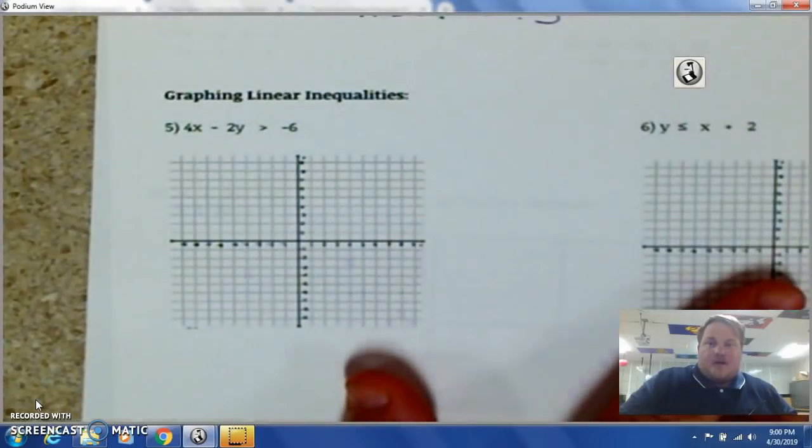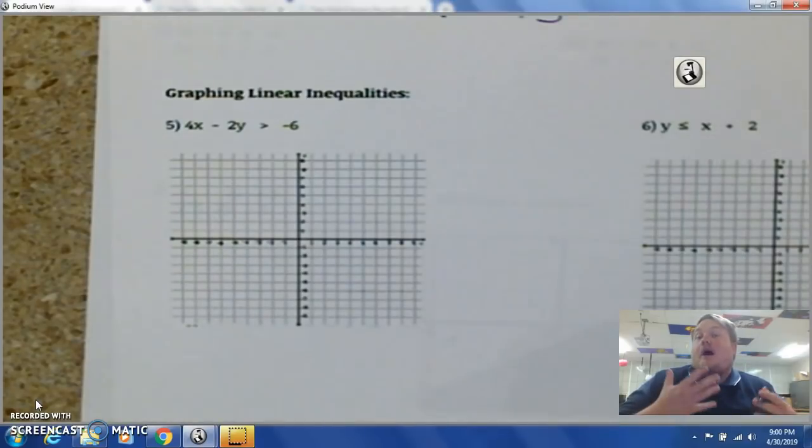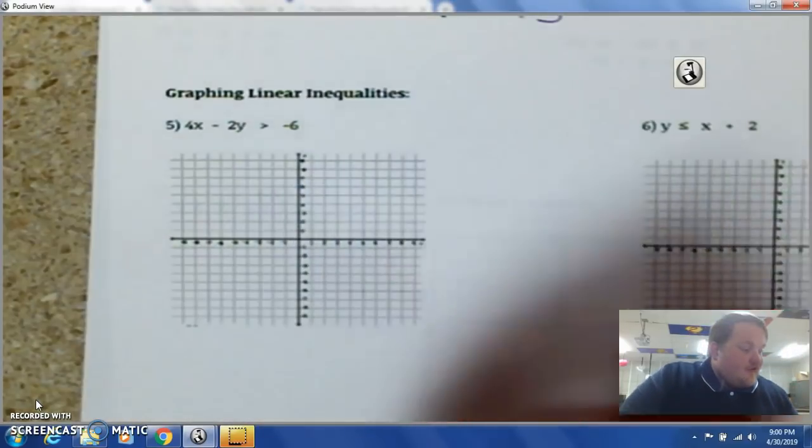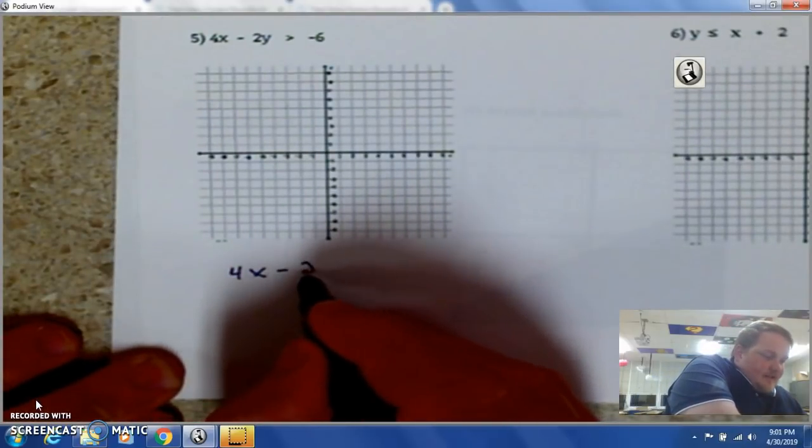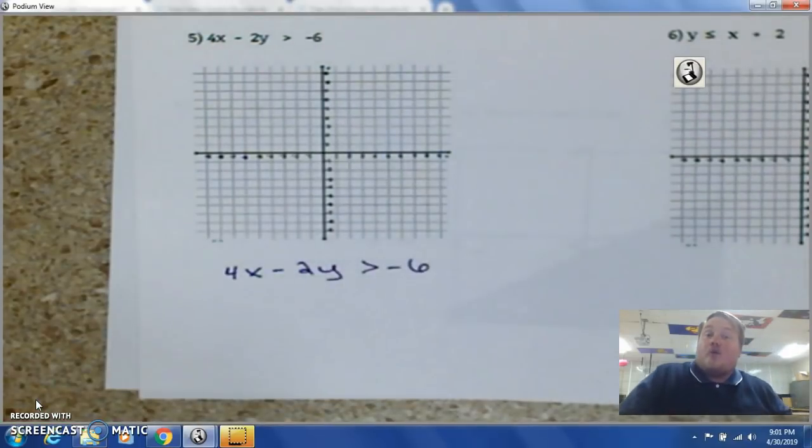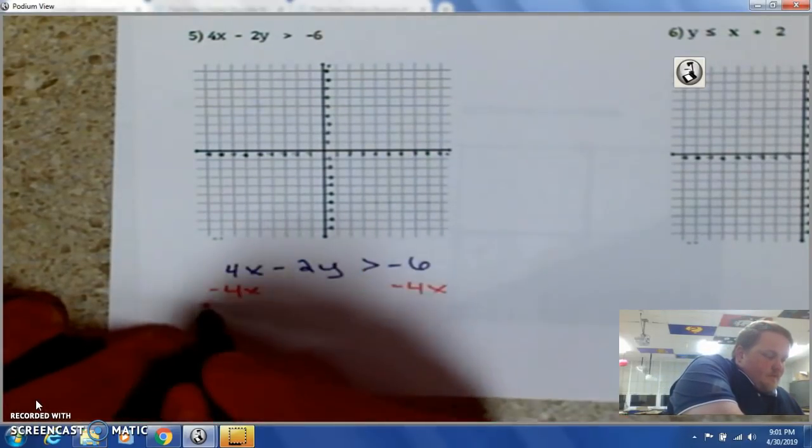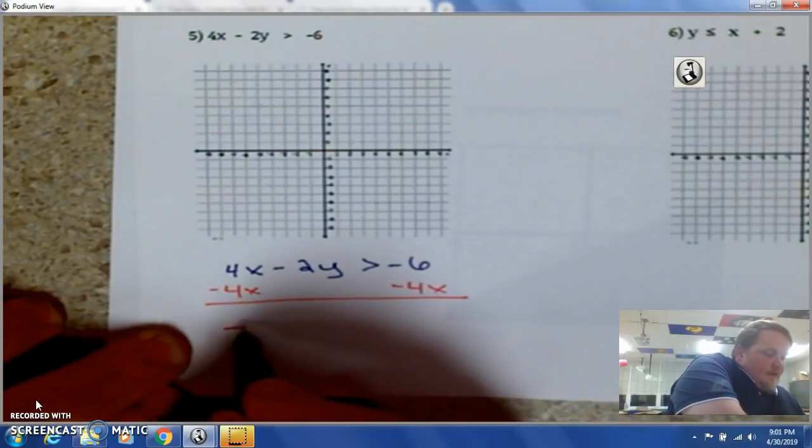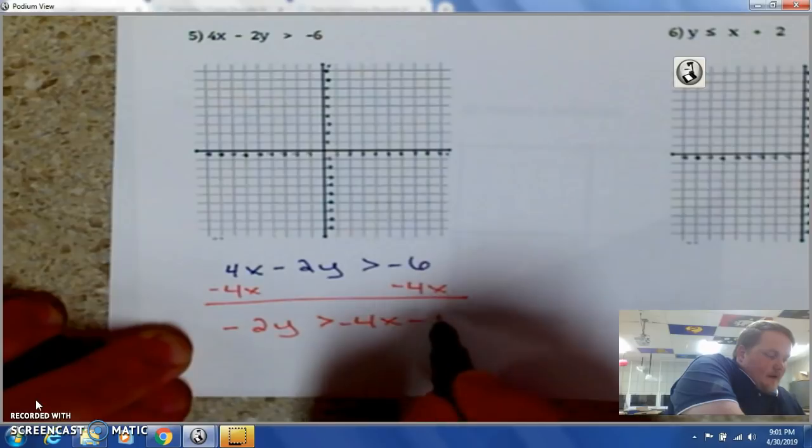Down at the bottom. Graphing linear inequalities. Well, first off, we have to put it in that y equals or y is less than or equal to whatever form. So, we're going to have to go down here. 4x minus 2y is less than negative 6. We have to solve for y. So, I'm going to subtract 4x from both sides.